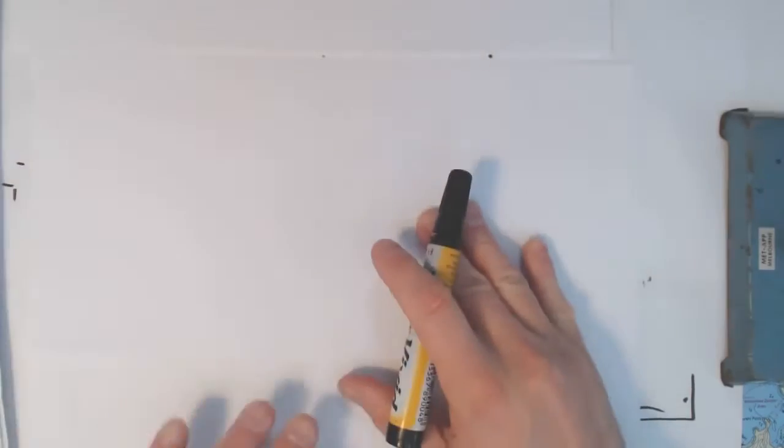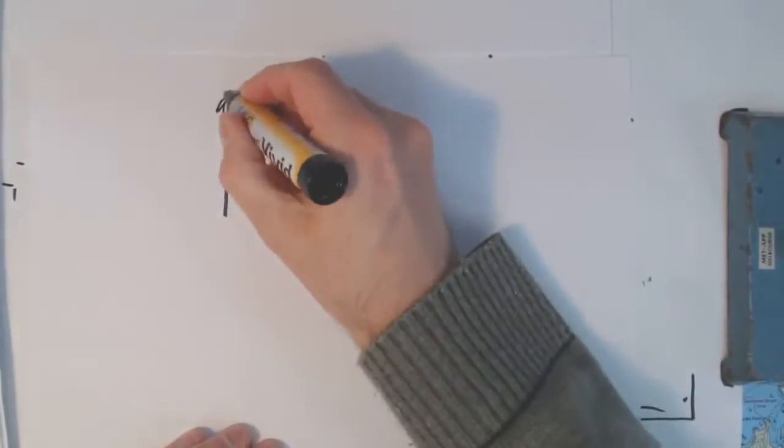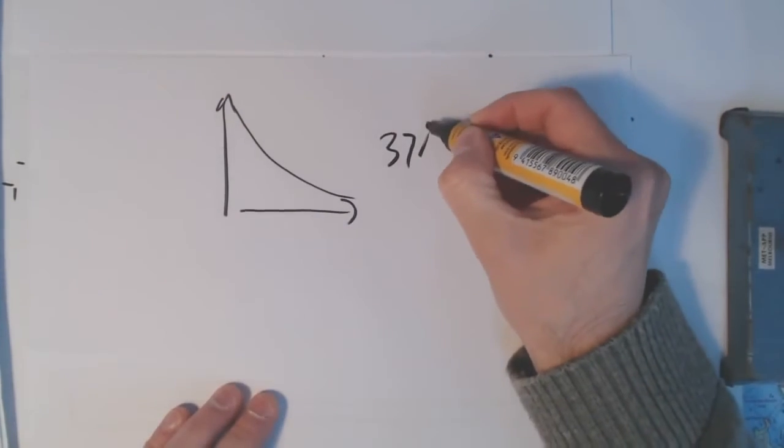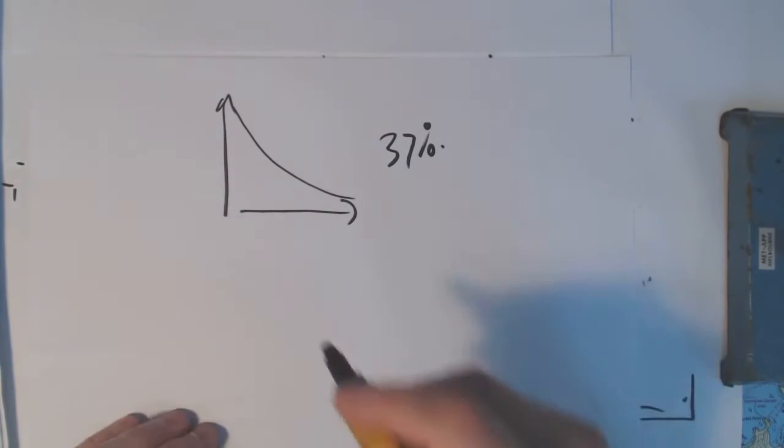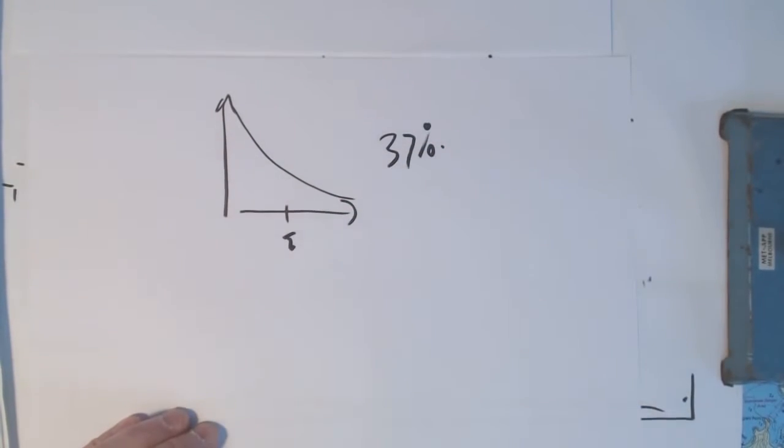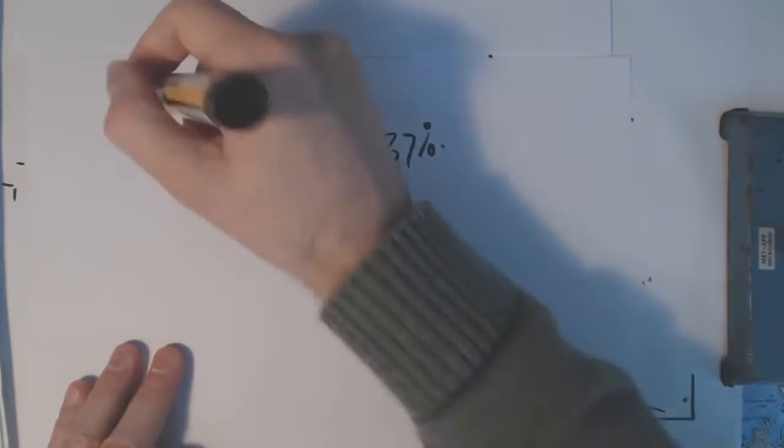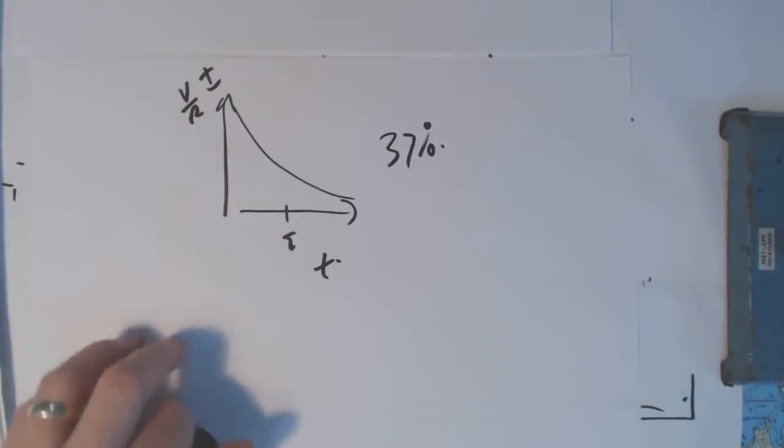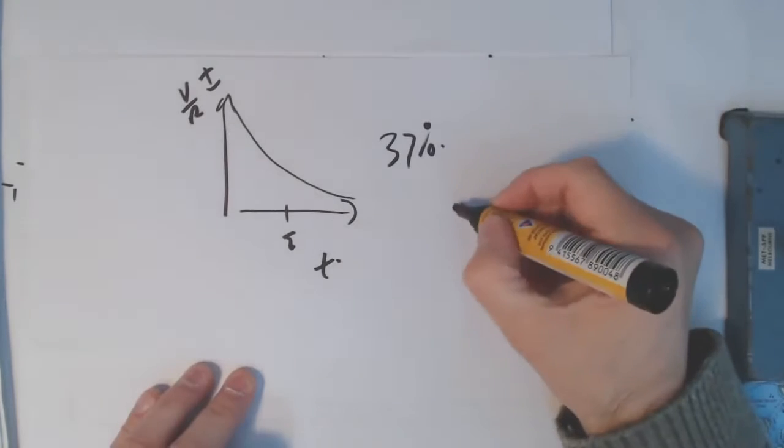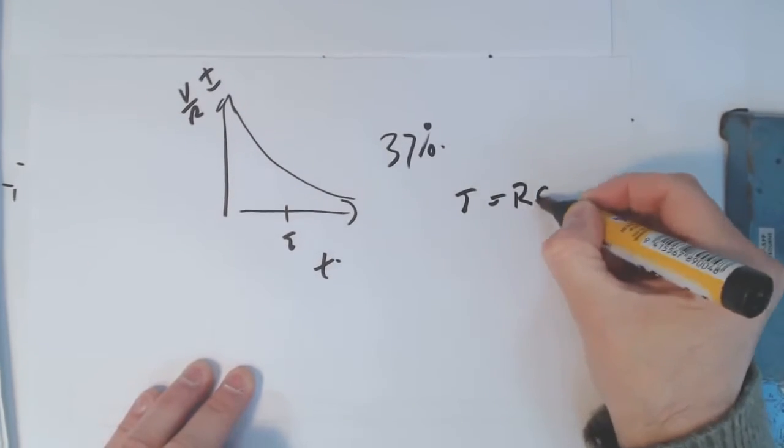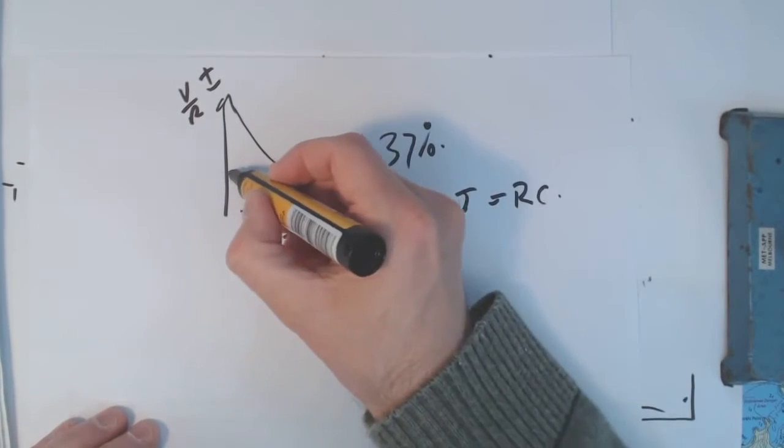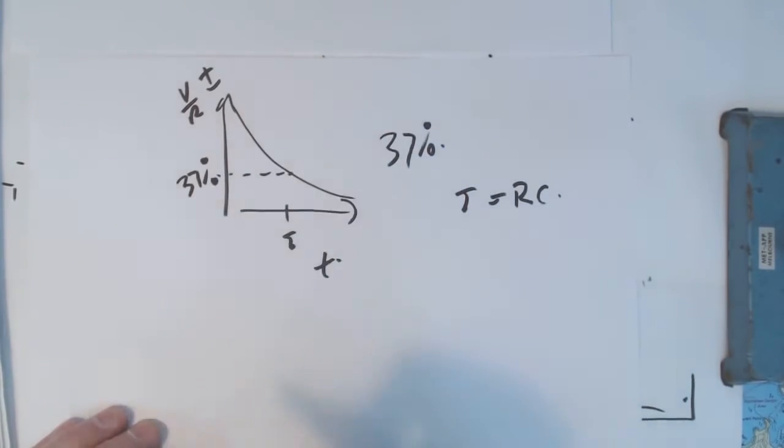And for graphs that look like this, like that, the 37% tells you that after one time constant. So if that's one time constant, remembering like for our circuit, this could be the current starting up at V over R. This is a current time charging graph. If I want to know what the current is after one time constant, which is equal to RC, then after one time constant, the 37% is what the current will be.